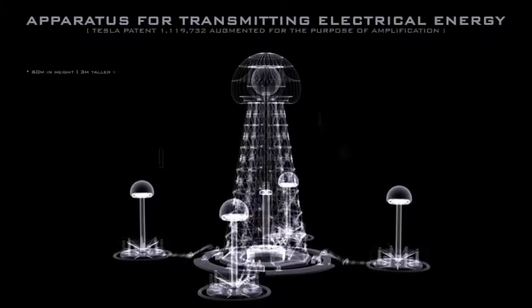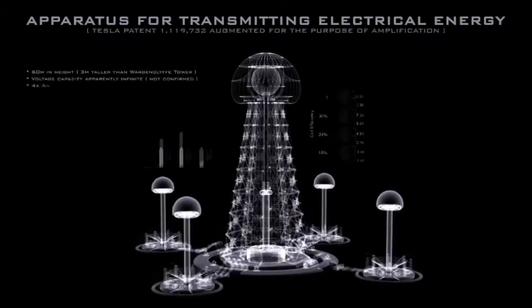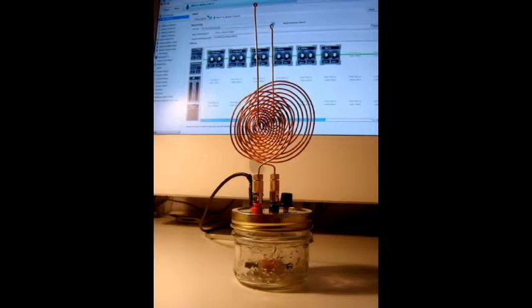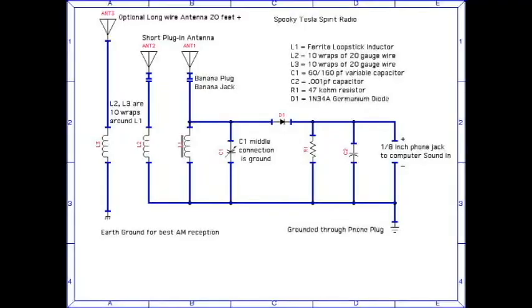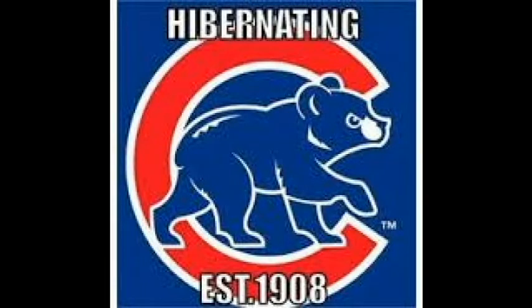Both of the in-game inventions are based on their real-life counterparts. The Spirit Radio was an invention Tesla made in the late 1800s to communicate with the dead. His invention was made of nickel detectors and relays with an inductor-capacitor circuit. One can listen to AM radio with this device, though I have a feeling hearing the Cubs lose the World Series wasn't on his main agenda.